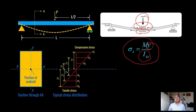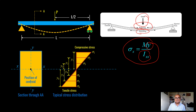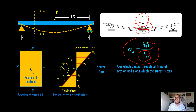We complete the stress diagram by connecting all the points. This is known as a linear elastic stress distribution. Most of the time in civil, structural and mechanical engineering, we use linear distribution to design elements. The neutral axis passes through the centroid of the section and has zero stress.